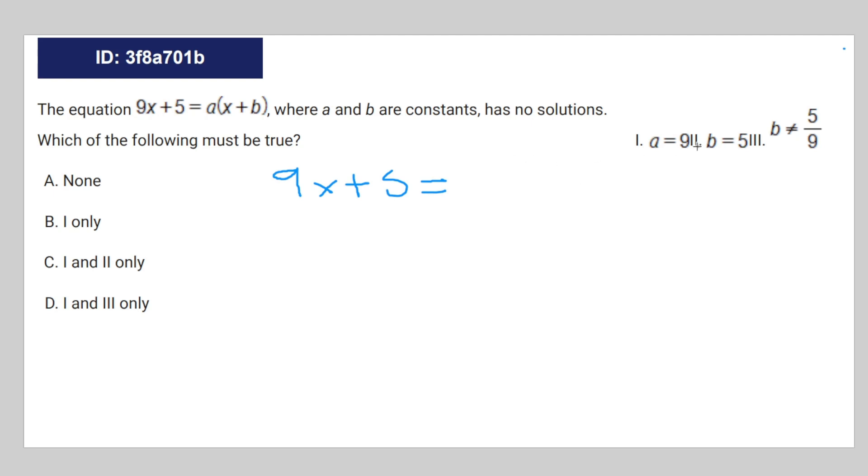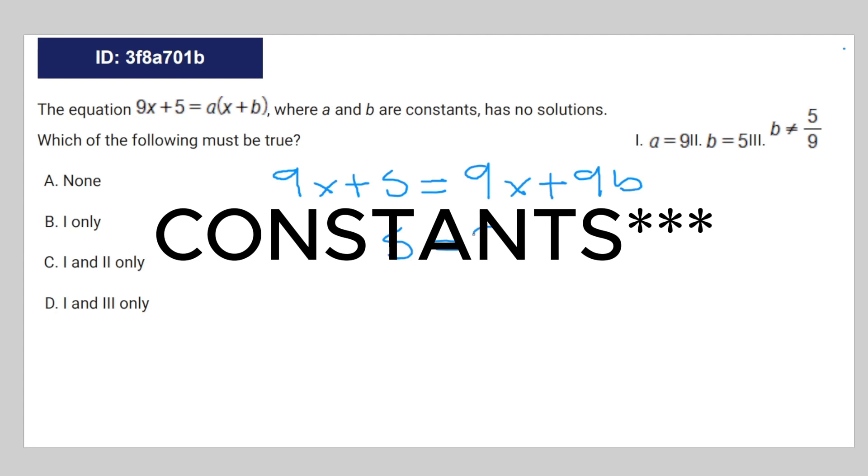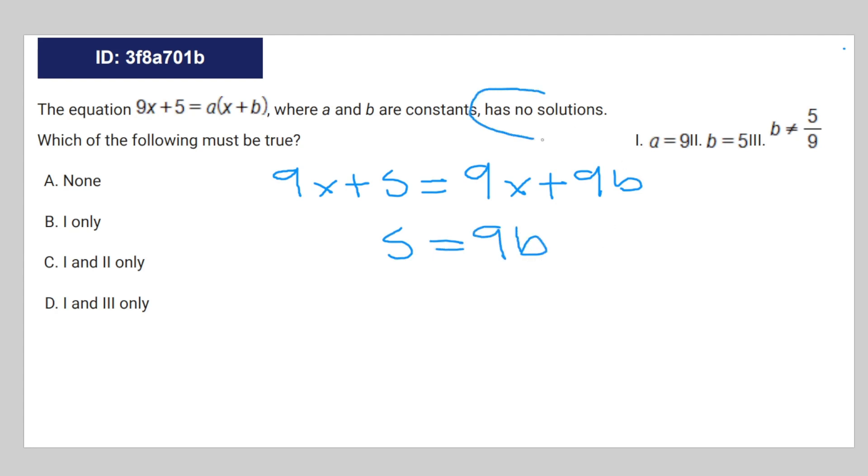And the only way you can do that is if a is equal to 9. Because if a is equal to 9, you can write out the equation like this. And then you can subtract 9x from both sides, and you're just left with variables, which is a pretty integral step into having no solutions.